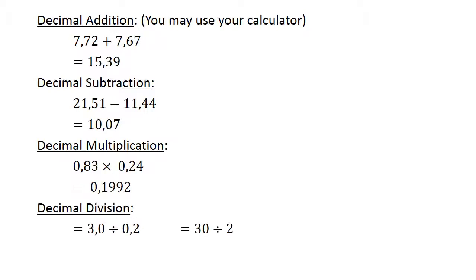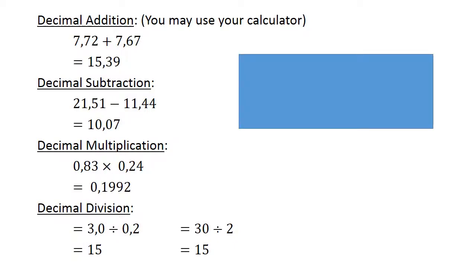Decimal division. 3.0 divided by 0.2. Multiply both with 10 to get whole numbers. 30 divided by 2 equals 15.